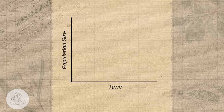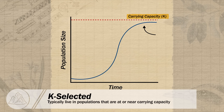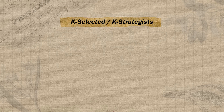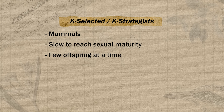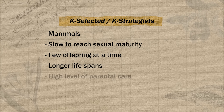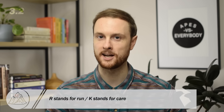The second strategy is the exact opposite — quality over quantity. These organisms have a few offspring at a time and invest a tremendous amount of energy into caring for them and ensuring that they survive. We call these organisms K-strategists or K-selected species because they typically live in populations that are at or near carrying capacity, represented with the letter K. K-selected species are generally larger organisms like mammals that reach sexual maturity later in life and only produce a few offspring at a time. They have longer lifespans than R-strategists and live in habitats where competition for resources is very high. A helpful memory trick: R-selected parents run away after they have their offspring, whereas K-selected parents stick around and care for their offspring.